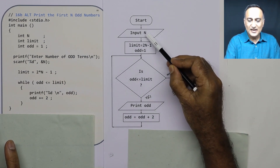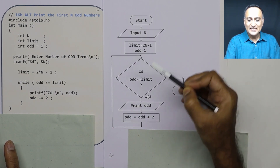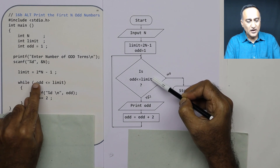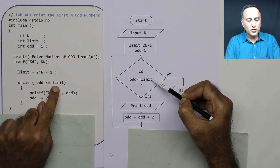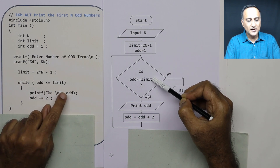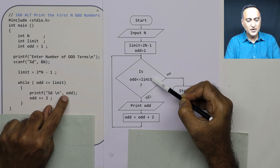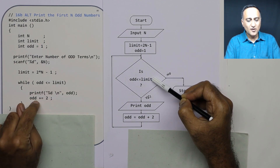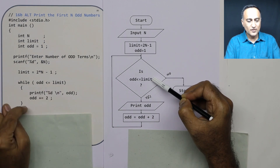Let's take an example — n is 5. 2 times 5 is 10, minus 1 is 9. So the last odd number to be printed is 9. Odd starts at 1; 1 ≤ 9, print 1. Odd becomes 3; 3 ≤ 9, print 3. Then 5 ≤ 9, print 5. Odd becomes 7; 7 ≤ 9, print 7. Odd becomes 9; 9 ≤ 9, print 9. Odd becomes 11; 11 is not less than or equal to 9, so I come out and stop.